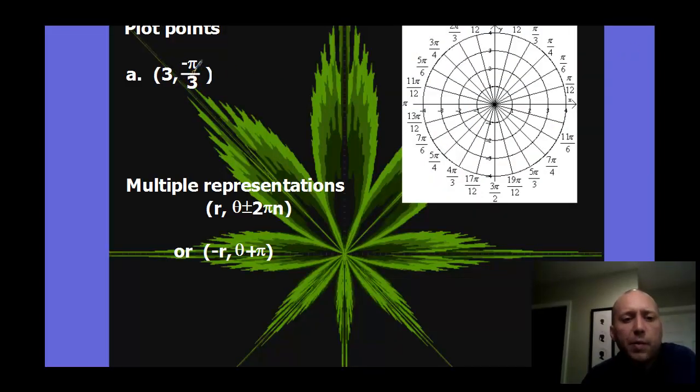3, negative pi thirds. First thing I realize is that this 3 right here is our r, which is our distance, negative pi thirds is theta. When I actually plot this, I kind of plot in the first order, I plot the y value, which is really here the theta value first, the second value first, theta. Negative pi thirds is along this side. So this right here is negative pi thirds. And then my distance is 3. And so from the pole, I go 3.